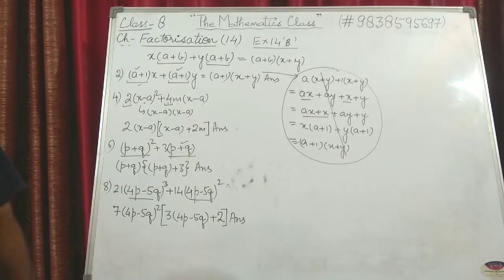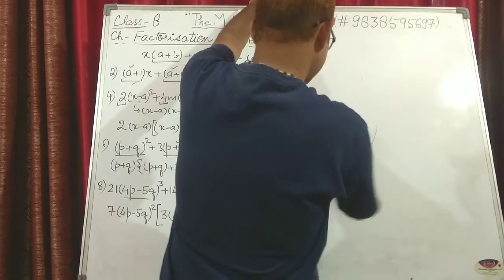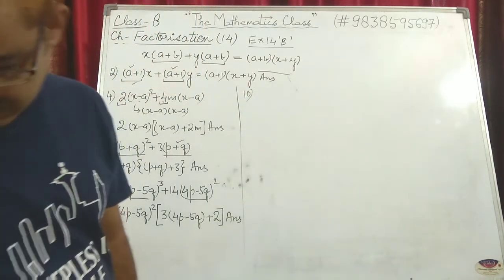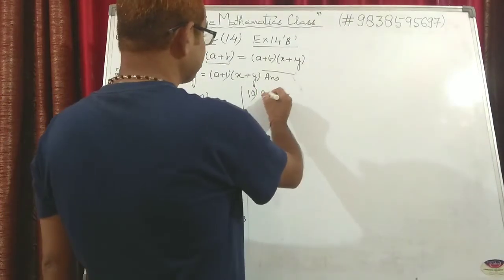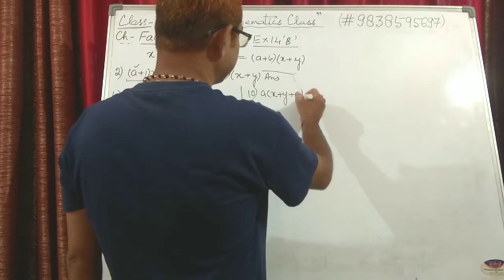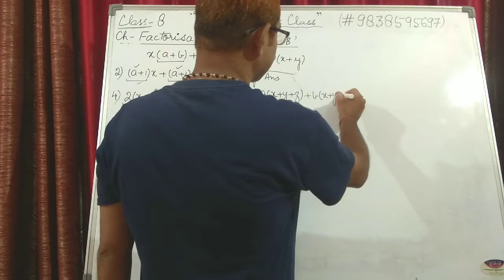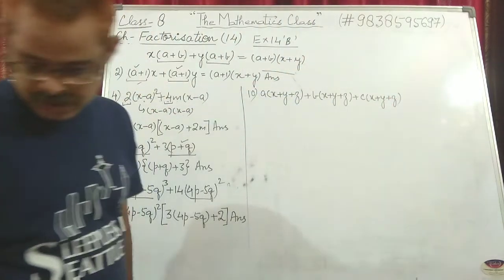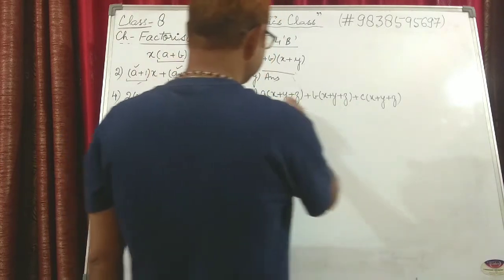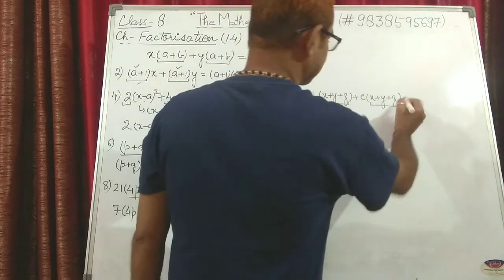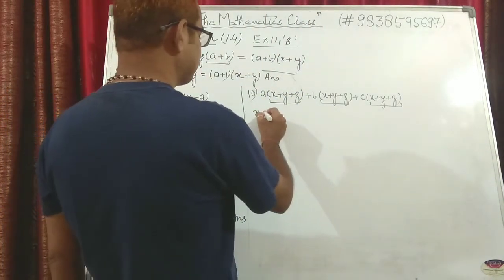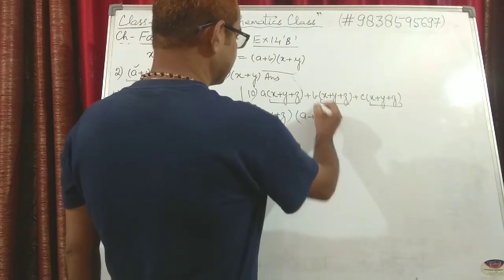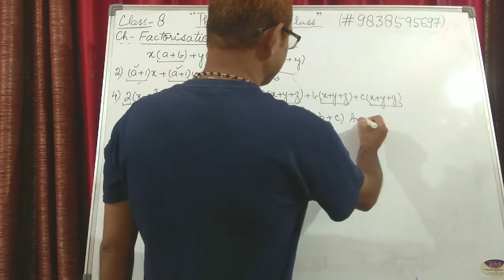Question 10: a(x+y+z) + b(x+y+z) + c(x+y+z). In all three terms the polynomial (x+y+z) is common. Take (x+y+z) common. What is left? a + b + c. Answer: (x+y+z)(a + b + c).